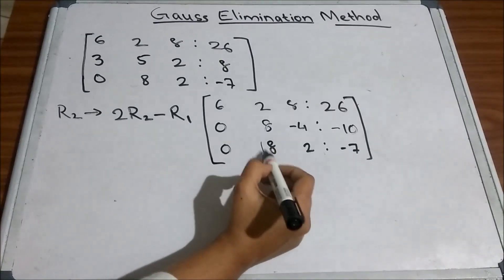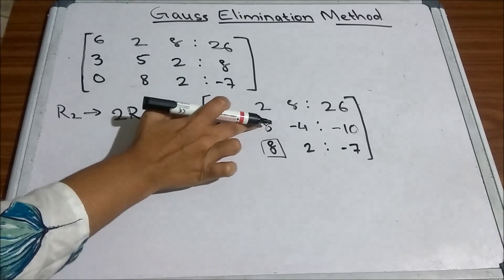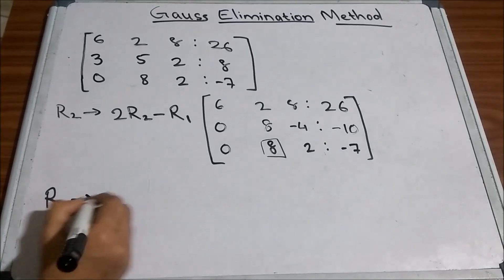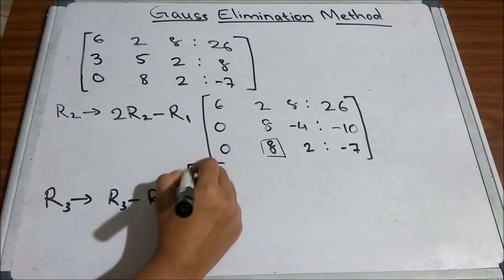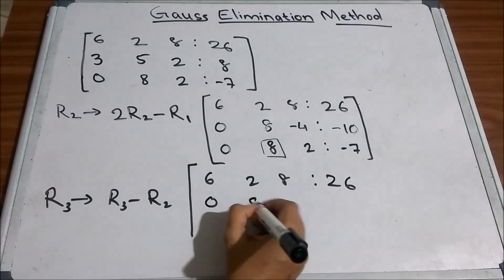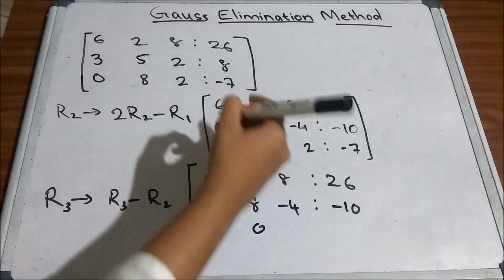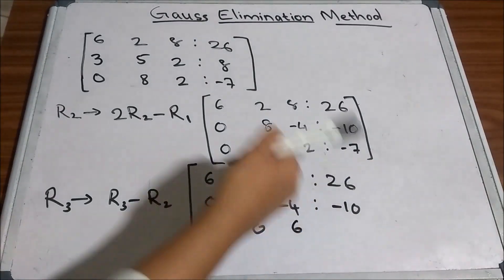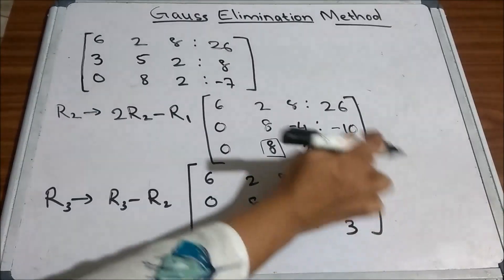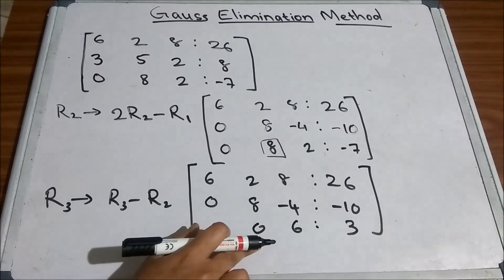Now we need to make the element below a22 equal to 0 as well. The element in row 3, column 2 is 8, and in row 2, column 2 it is also 8. So we apply R3 → R3 − R2. The first two rows remain the same. The third row becomes: [0, 0, 6 | 3]. We now have a triangular system with all elements under a11 and a22 equal to 0.